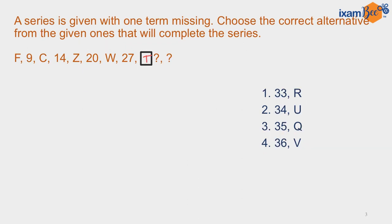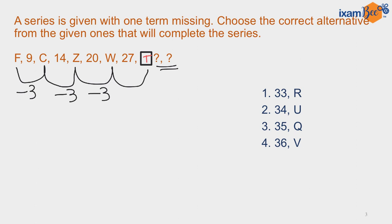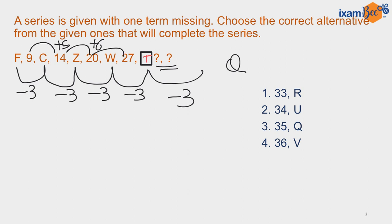An alphanumeric series is given and you have to find the missing term. There are two series used here — one of alphabets and one of numbers. Subtracting 3 from the place value of F gives C; subtracting 3 from C gives Z; subtracting 3 from Z gives W; subtracting 3 from W gives T; and subtracting 3 from T gives Q. For the numbers: 9 plus 5 is 14; 14 plus 6 is 20; 20 plus 7 is 27; so following the pattern, add 8 to 27 to get 35. Therefore, option number 3 is correct.